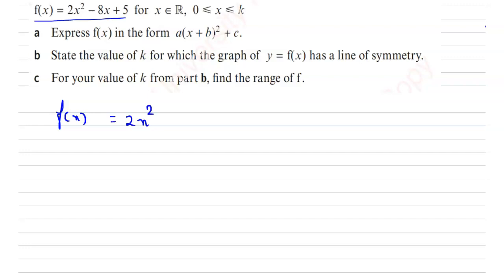The domain is given as 0 less than or equal to x less than or equal to k. We have to express f(x) in the form a times (x plus b) whole squared plus c.